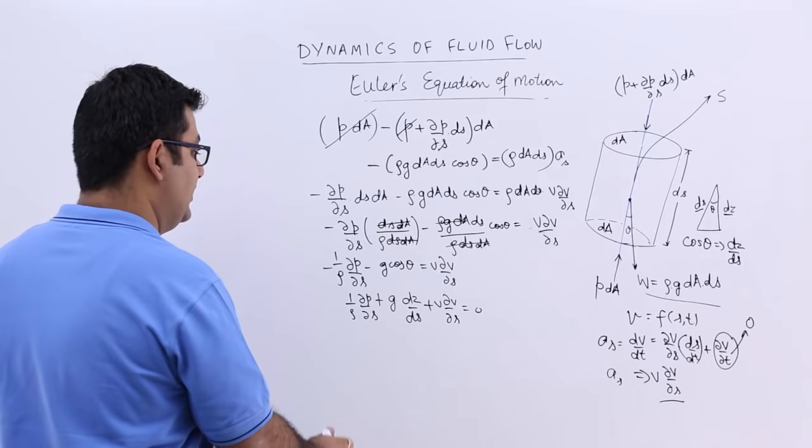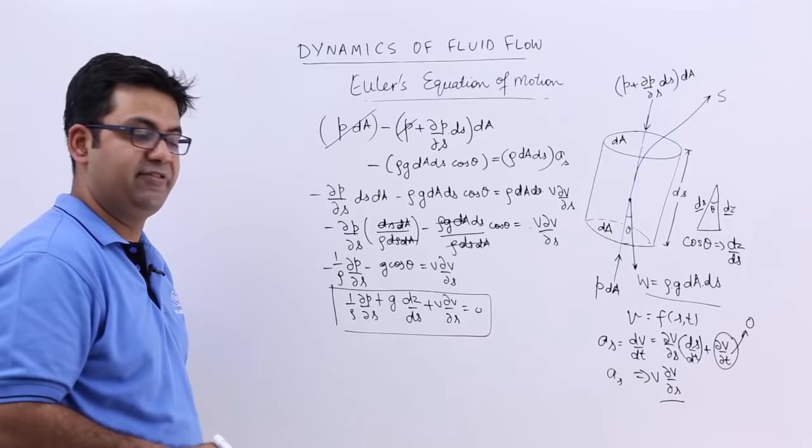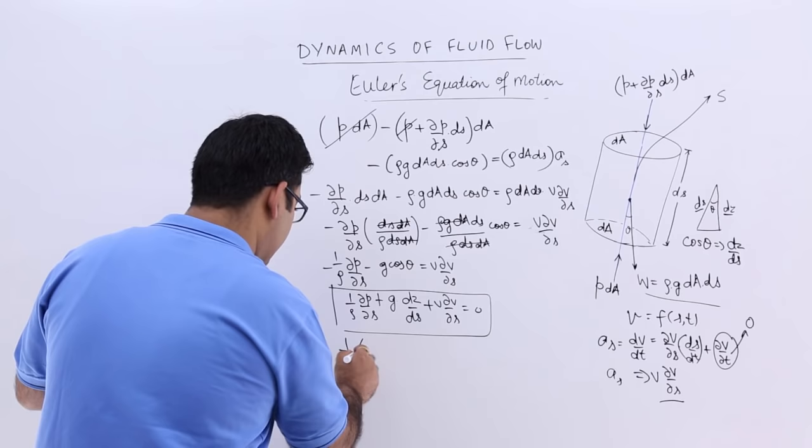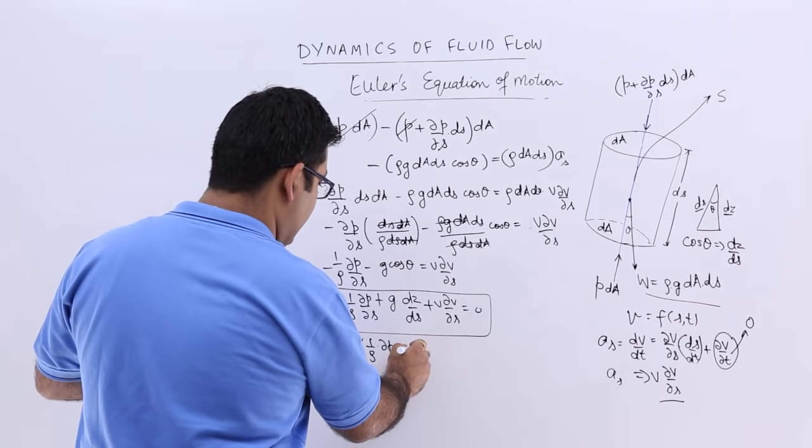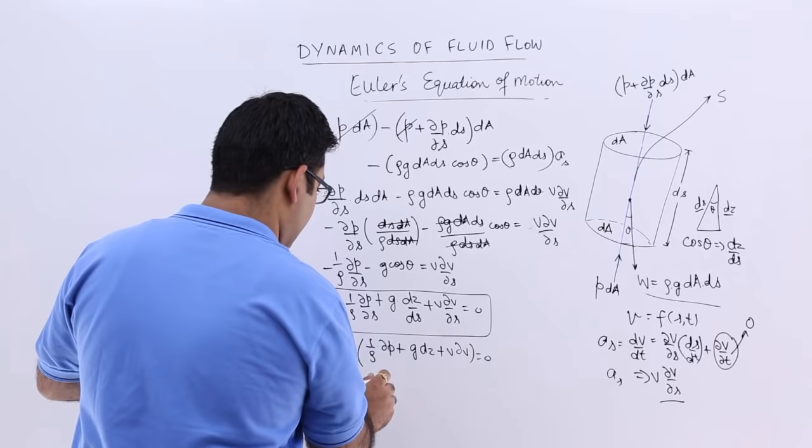Now from the bottom, we have ds, ds and ds. You can take ds common. So you will have 1 by ds into 1 by rho into curly p plus g into dz plus V into dV. Now ds, 1 by ds cannot be 0.